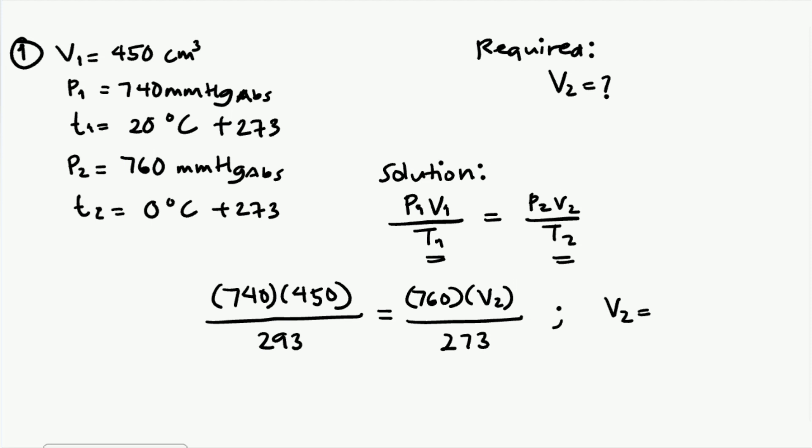Let's reset our calculator before solving. So 740 times 450 over 293, then the other side 760 times X over 273, then solve. The value we get is 408.25. So two decimal places, 408.25 cubic centimeters. This is our final answer for problem number one. We proceed to problem number two.